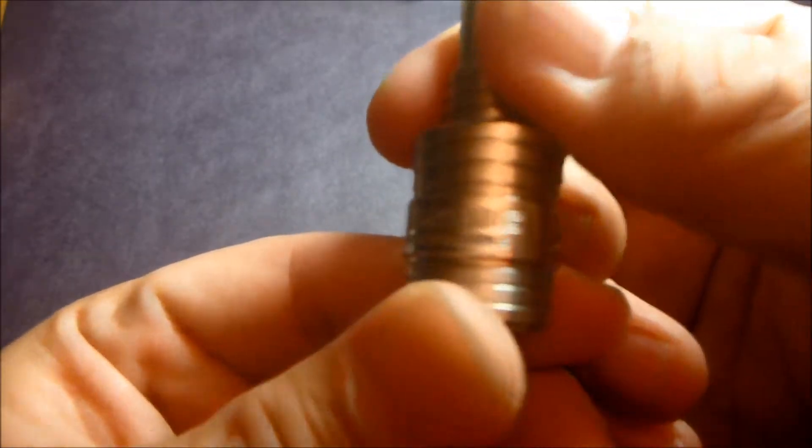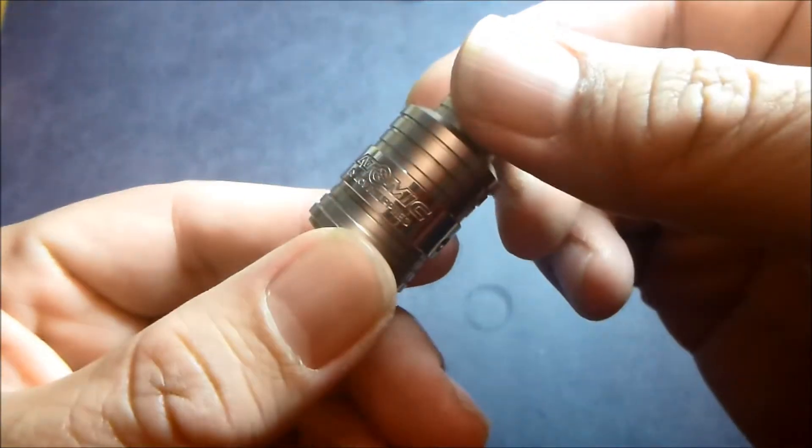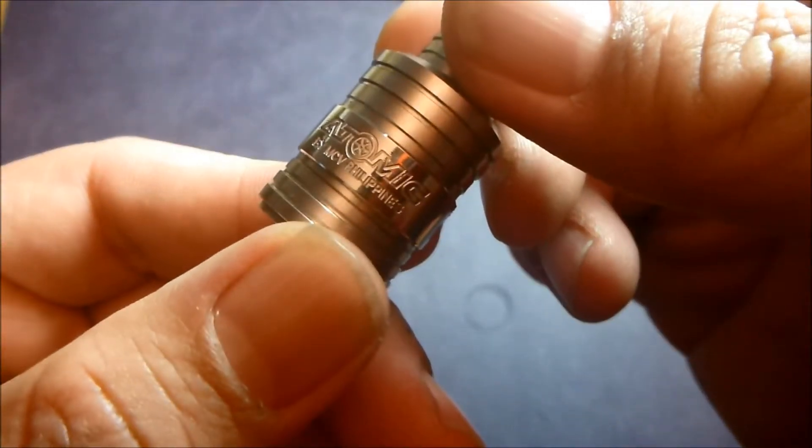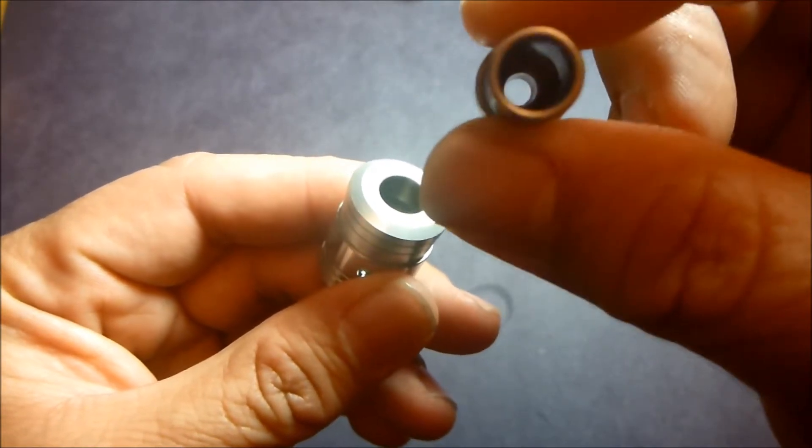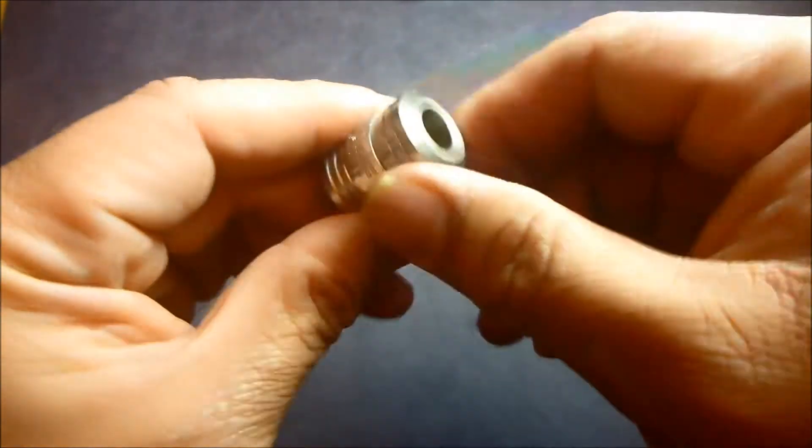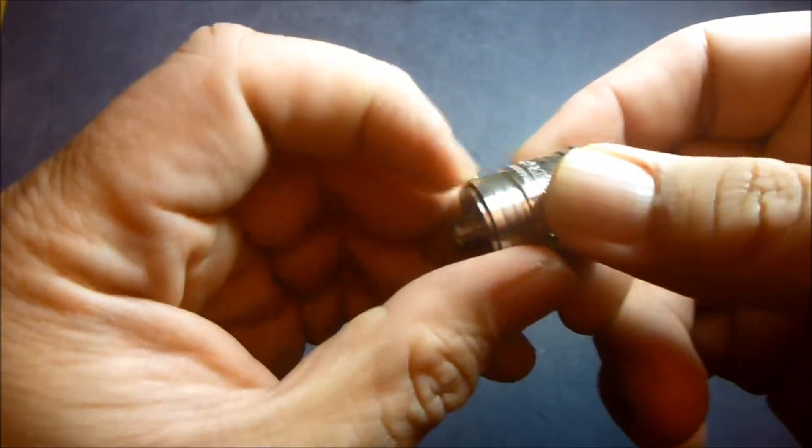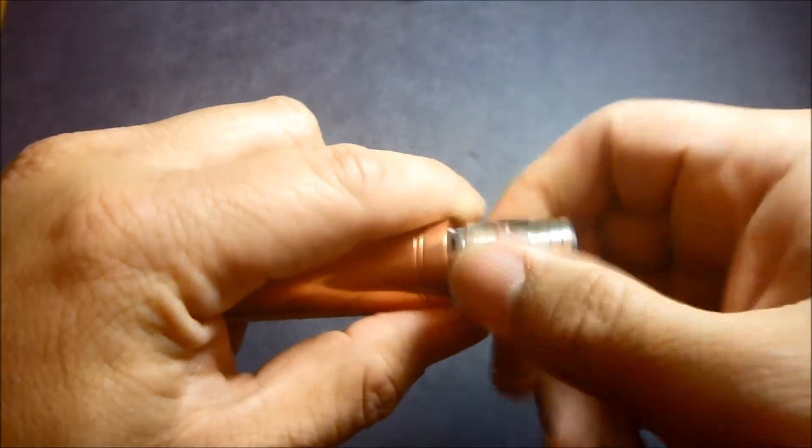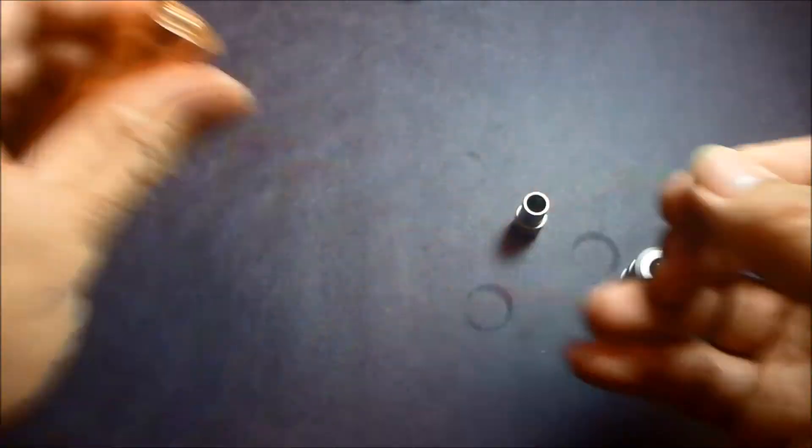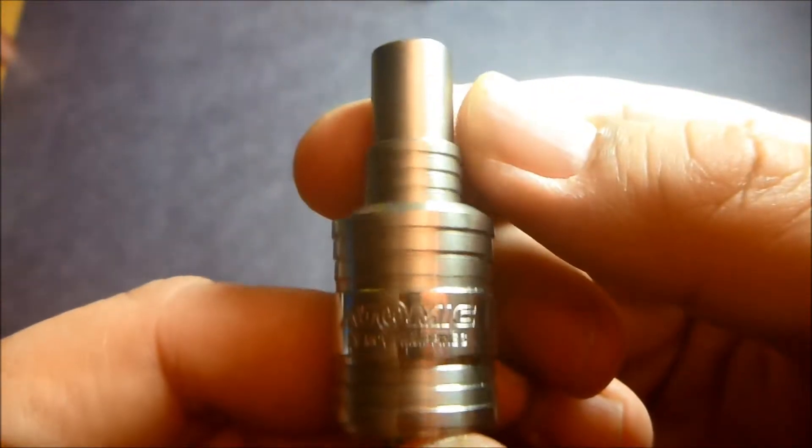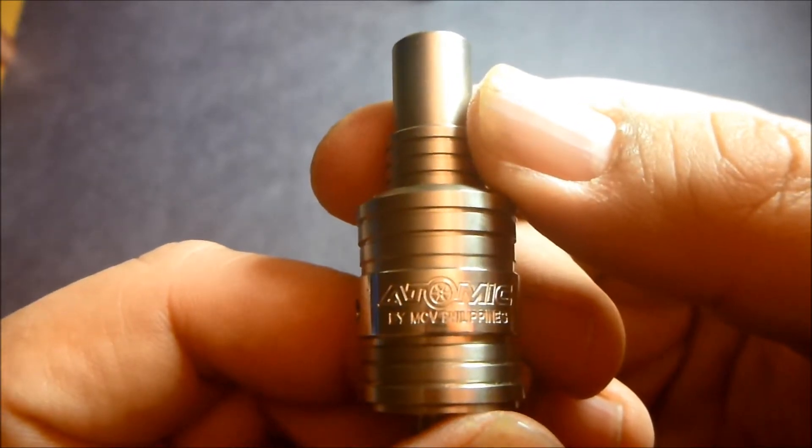Pass the packaging. So again, this is the Atomic. Let's zoom in on that. There we go. Nice drip tip. Nice wide bore. Just tapers in a little bit at the end. Let's see if I can pull this open. I already had a pre-build on this. So this is the Atomic Clone from EH Pro.